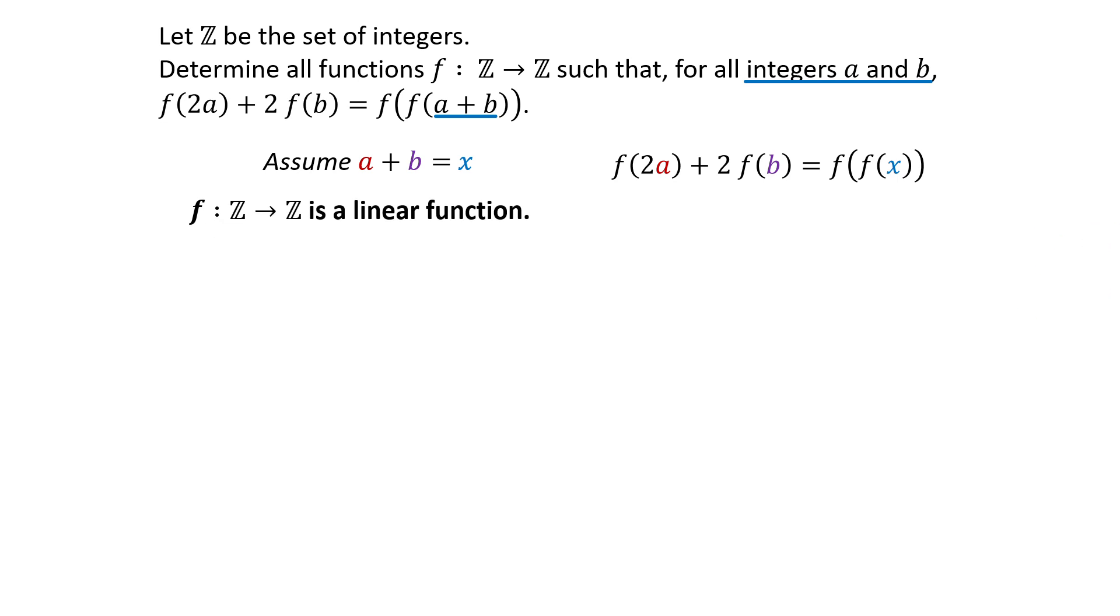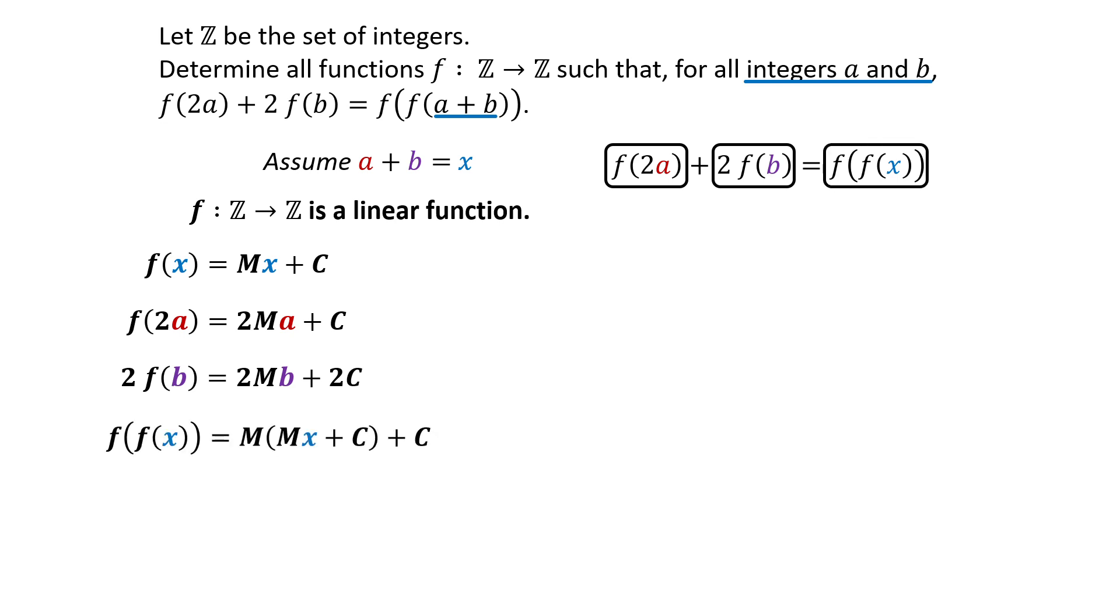We can represent every linear function by Mx plus C, where M and C are arbitrary constants and X is an integer. So F of 2A equals 2MA plus C, 2F of B equals 2MB plus 2C, and F of F of X is M times Mx plus C plus C.